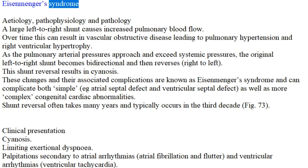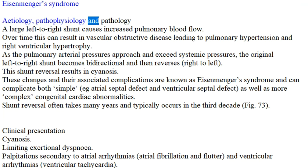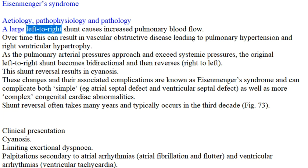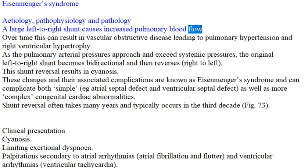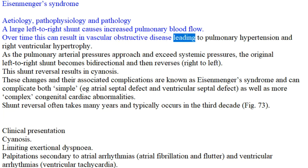Eisenmenger's Syndrome: Etiology, Pathophysiology, and Pathology. A large left-to-right shunt causes increased pulmonary blood flow. Over time, this can result in vascular obstructive disease, leading to pulmonary hypertension and right ventricular hypertrophy.